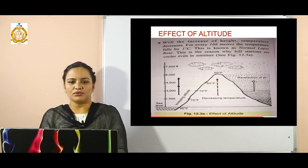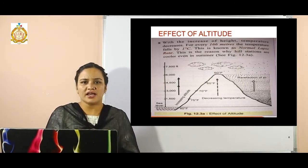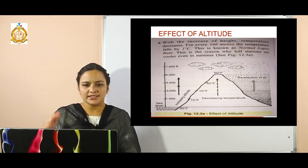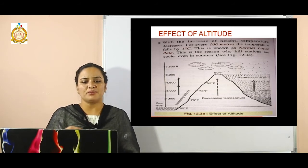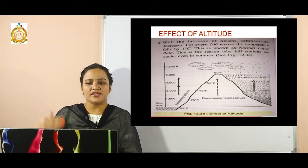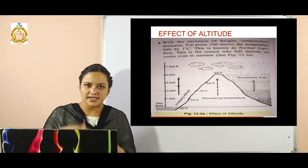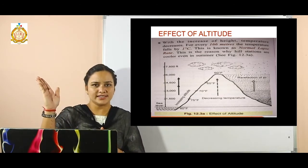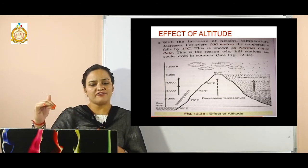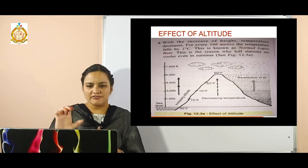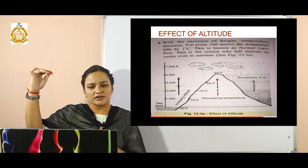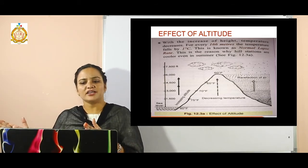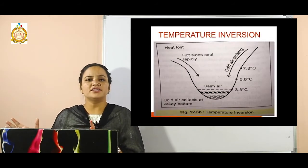Now for a detailed description of the altitude factor: with an increase of height, temperature decreases. For every 166 meters, the temperature falls by 1 degree Celsius. As shown in the mountain figure, as you go to increasing altitude, temperature drops from 80 degrees Fahrenheit to 75 degrees Fahrenheit, and falls to 60 degrees Fahrenheit at the mountain top. There is also rarefication of air to be considered on the opposite side of the mountain.